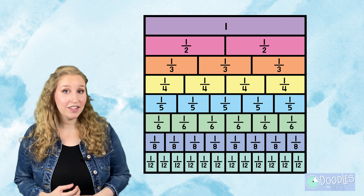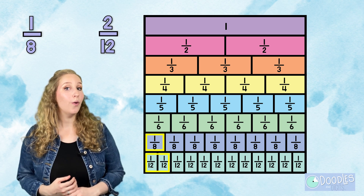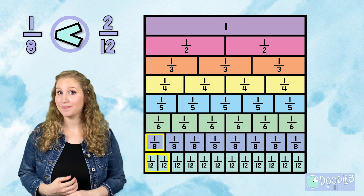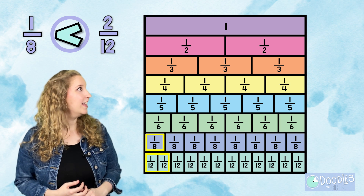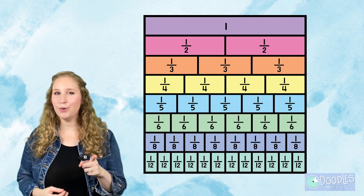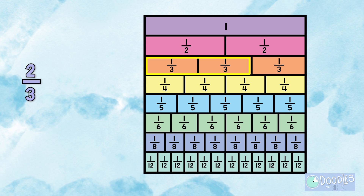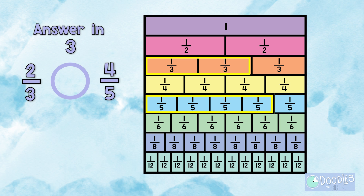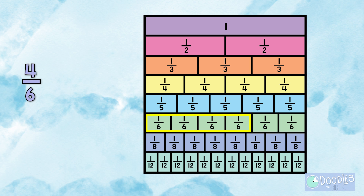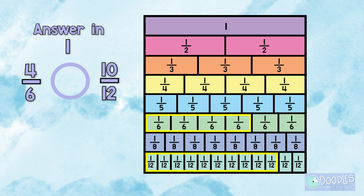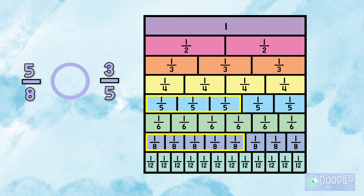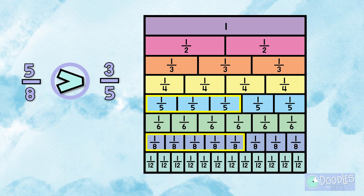Let's try another one. Which one's larger: one-eighth or two-twelfths? Now that we've tried a few together, let's see if you can compare a few on the number chart right now. Two-thirds or four-fifths? Two-thirds is less than four-fifths. Four-sixths or ten-twelfths? Four-sixths is less than ten-twelfths. Five-eighths or three-fifths? Five-eighths is greater than three-fifths.